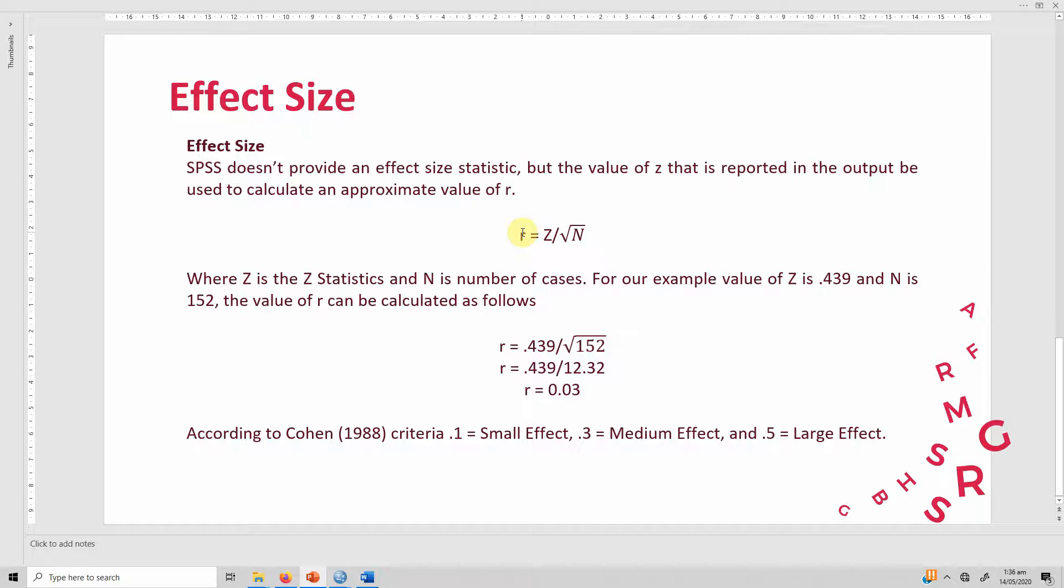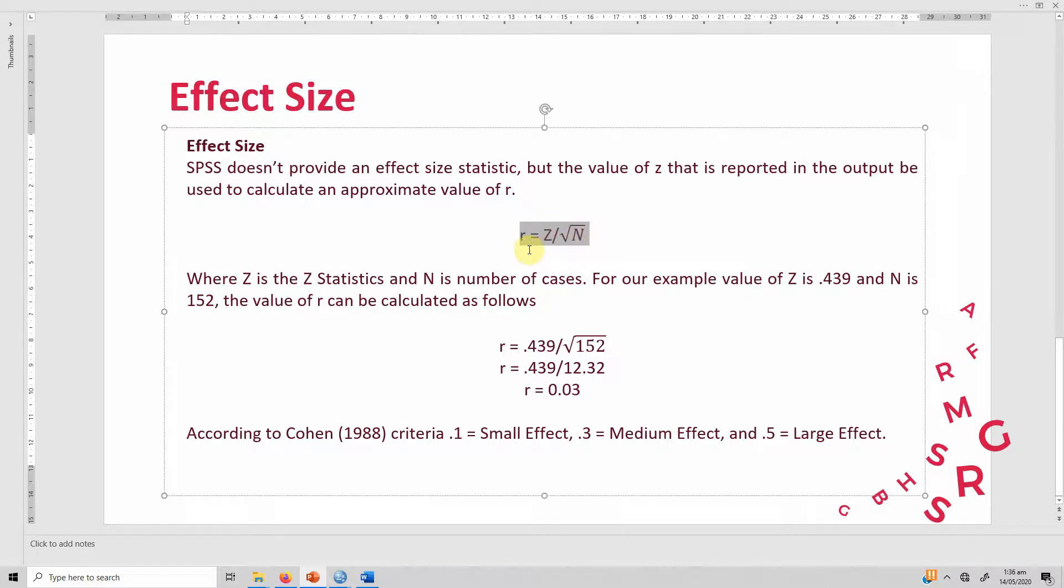Whether the difference between the groups, we want to evaluate the effect size of the difference. In order to do this, we have got the simple formula. We have got Z and we have got N. In this case, the Z value was 0.439. You do not need to put the minus sign. And the N value was 132. If you do this, the effect size or the difference or the effect of difference is actually negligible, because it's even less than 1, which actually amounts to small effect.